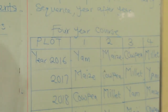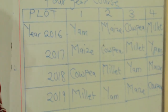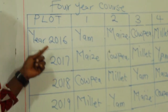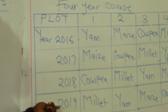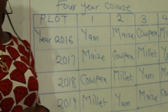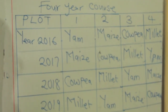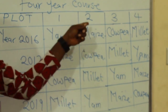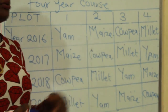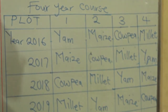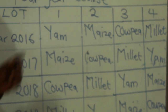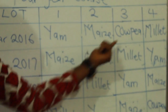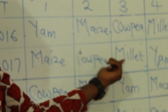Look at the table: you see the plot and then the year. This farmer has about four plots of land — one, two, three, and four — and we are looking at a four-year course: 2016, 2017, 2018, and 2019. In the first plot in 2016 the farmer plants yam, then on another plot he plants maize, the next cowpea, and the fourth millet. The next year the farmer plants a different crop — not yam — he plants maize, then moves to the next plot and plants cowpea, then millet, then yam.